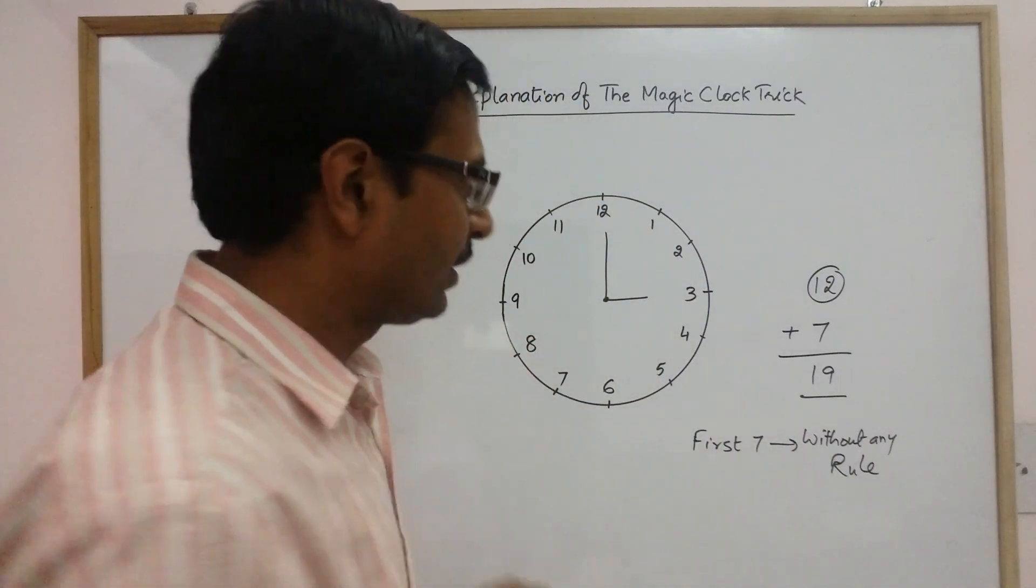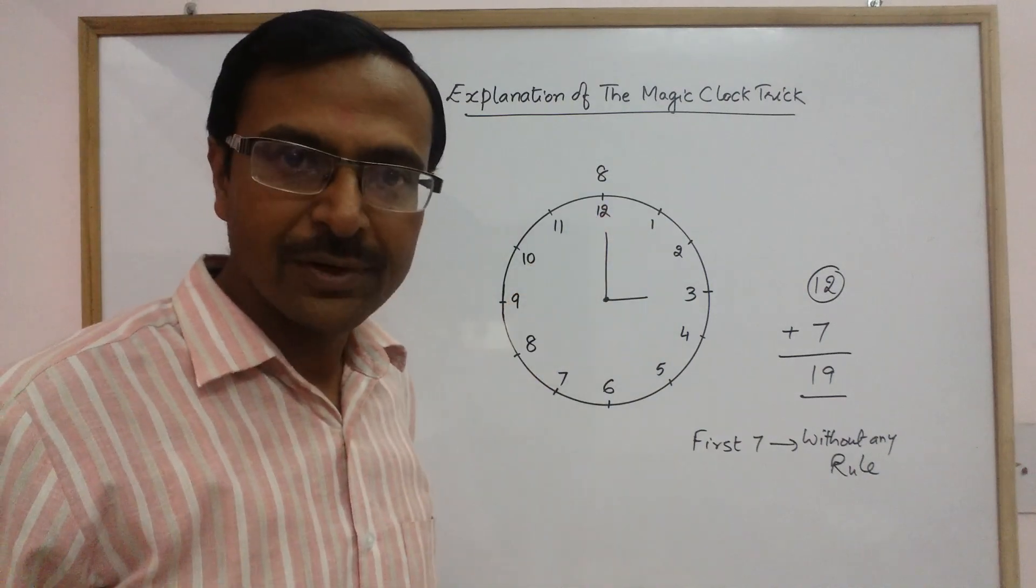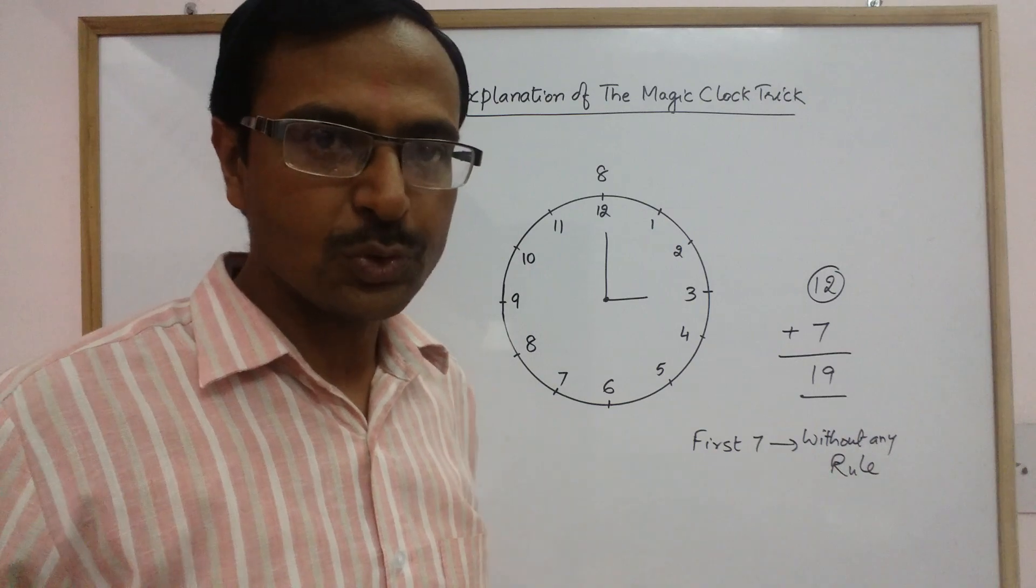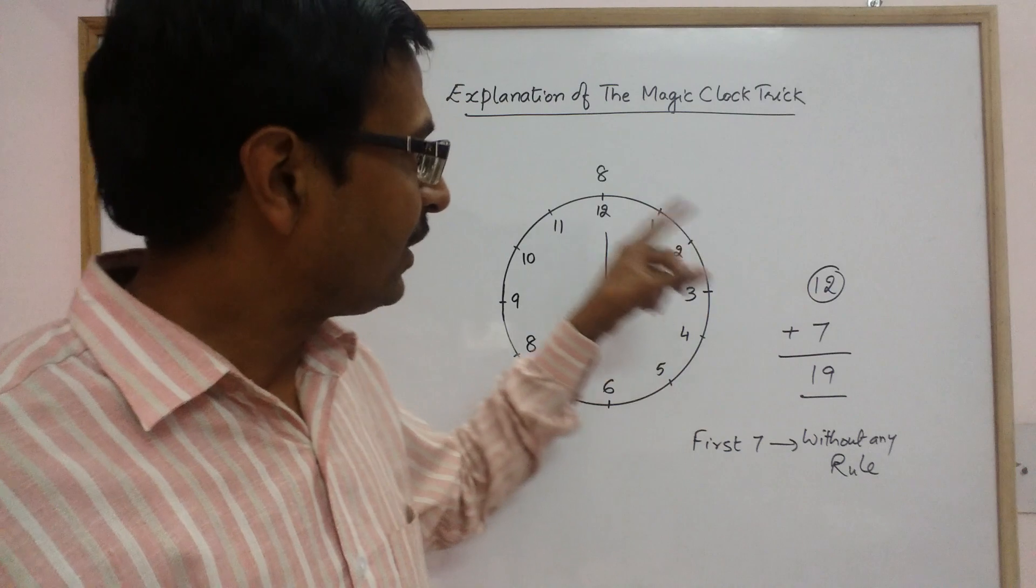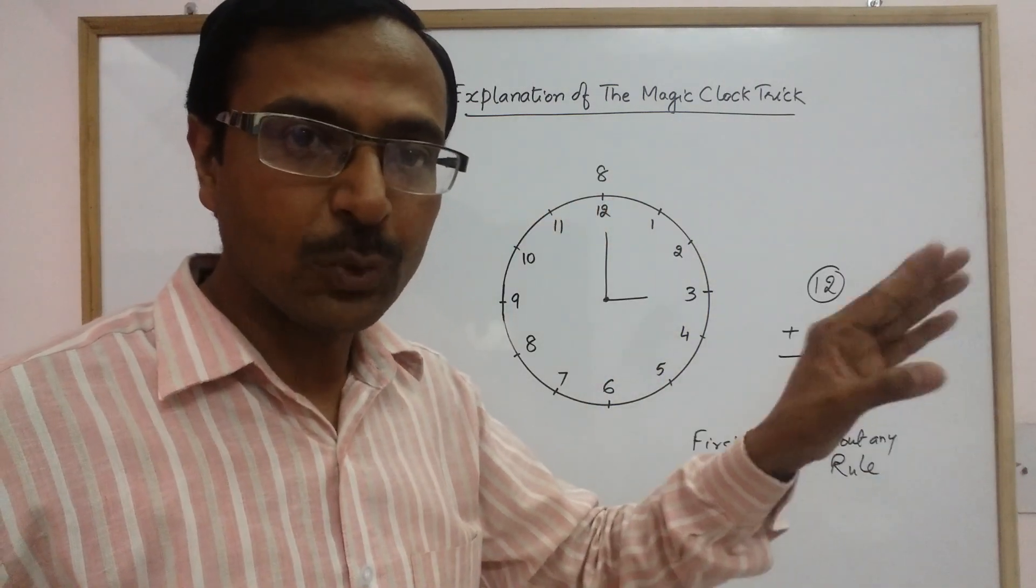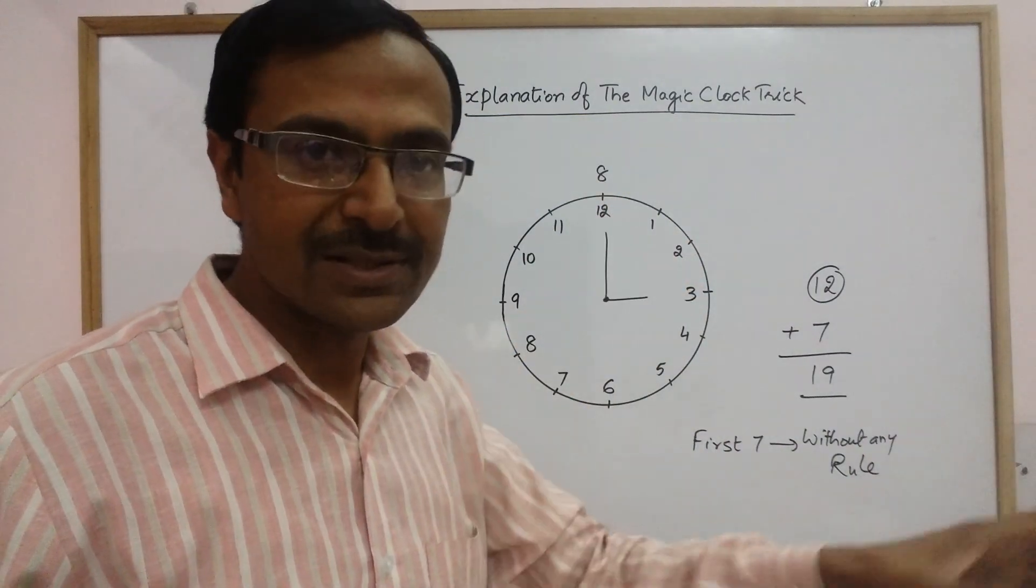Now the eighth one is to be kept here, that is on twelve. So if the person to whom you are showing the magic has thought of number twelve, then twelve plus eight in his mind, he will automatically complete twenty and he will stop you there on twelve itself. And that is the number he has thought.